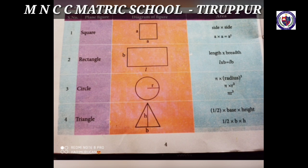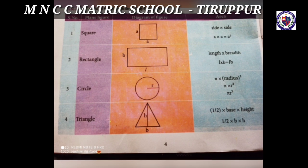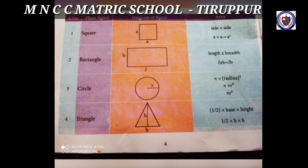The area of a rectangle is calculated using the formula: length × breadth. The area of a circle is calculated using the formula: π r². The area of a triangle is calculated using the formula: ½ × base × height.